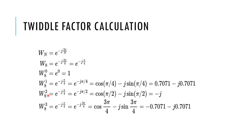W8 to the power of 2: we get cos(pi/2) minus j sin(pi/2), which is 0 minus j, so we get minus j. W8 to the power of 3 gives e to the power of minus j 3pi/4, which equals cos(3pi/4) minus j sin(3pi/4), equal to minus 0.707 minus j 0.707. These are the constant twiddle factor values used whether it is decimation in time or frequency.